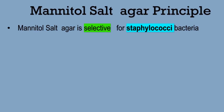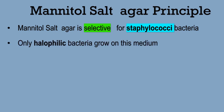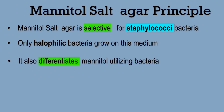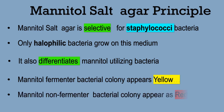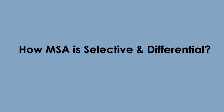MSA agar is selective for Staphylococci bacteria. Only halophilic bacteria grow on this medium. It also differentiates mannitol utilizing bacteria. Mannitol fermenter bacterial colonies appear yellow, and mannitol non-fermenter bacterial colonies appear red. Now let's discuss in detail how mannitol salt agar is selective and differential.